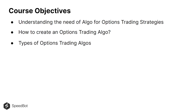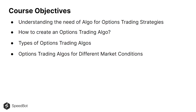We'll discuss the most popular types of option trading algos currently in the market and how you can make them. These algos could range from intraday-based to swing trade or expiry-based option trading algos. Later, we'll help you create your own option trading algos for different market conditions — for a bullish market, a bearish market, or a sideways market.